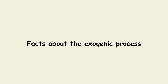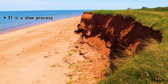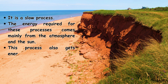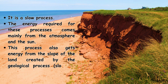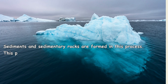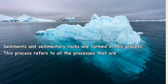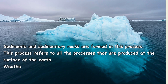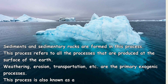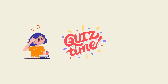Now let us check some interesting facts about the exogenic process. It is a slow process. The energy required for these processes comes mainly from the atmosphere and the sun. This process also gets energy from the slope of the land created by geological processes. Sediments and sedimentary rocks are formed in this process. This process refers to all processes produced at the surface of the earth — weathering, erosion, transportation, etc. are the primary exogenic processes. This process is also known as the destructive process.